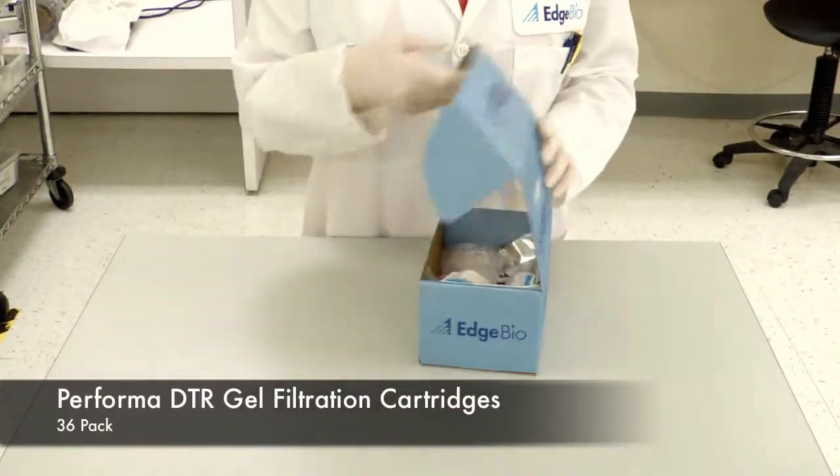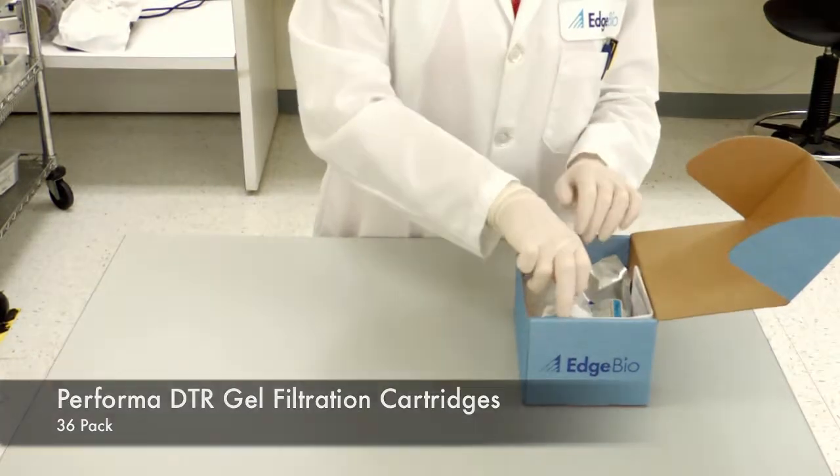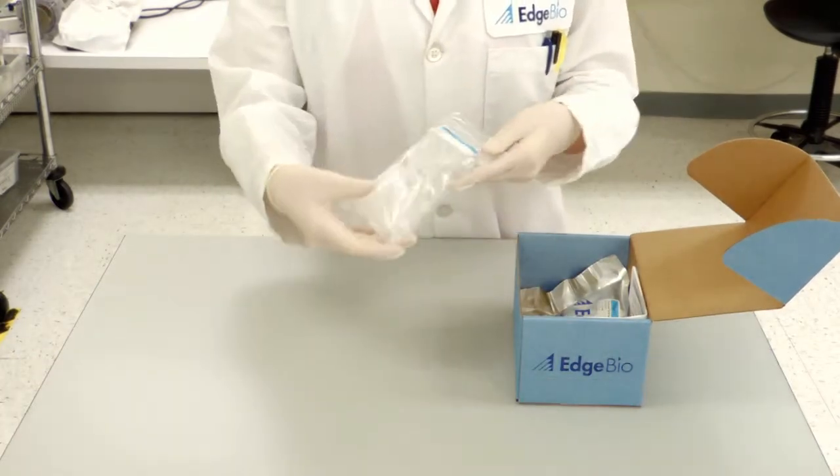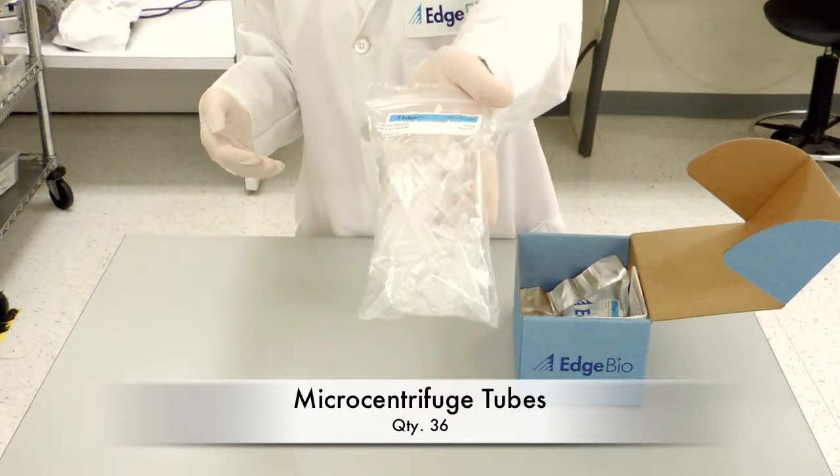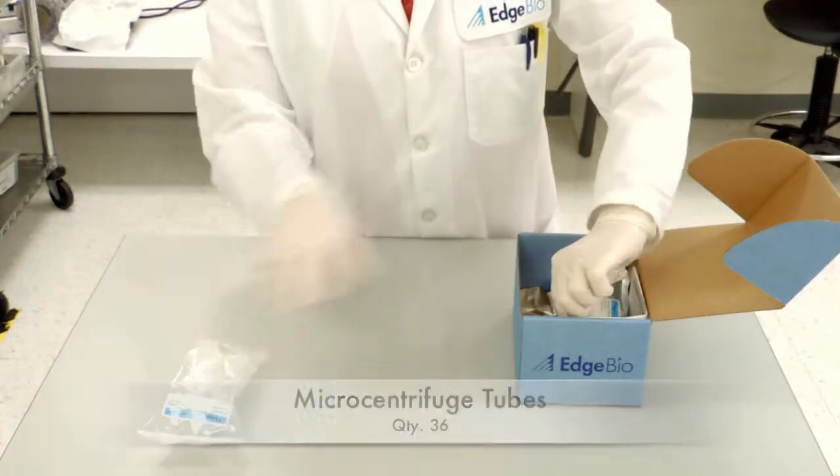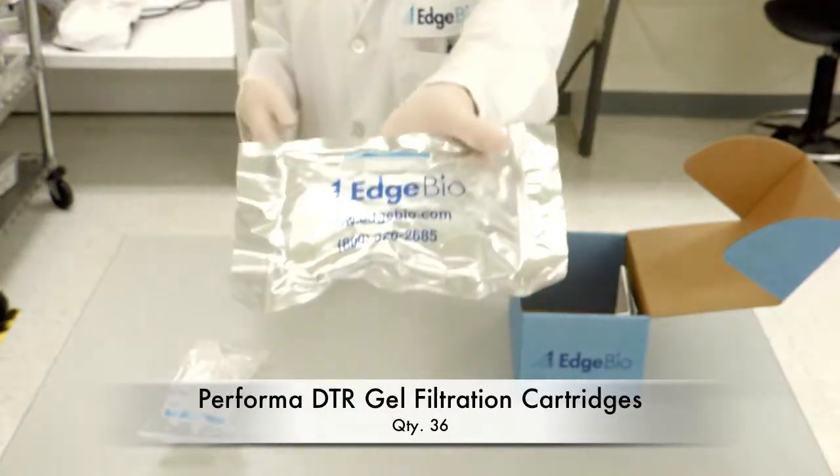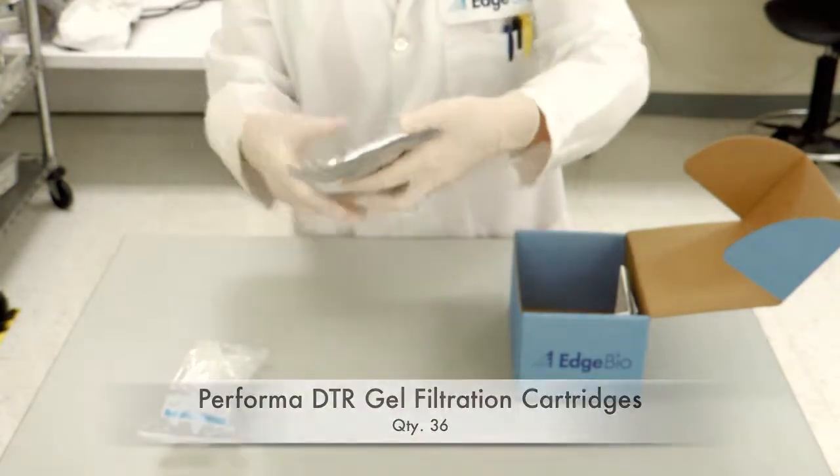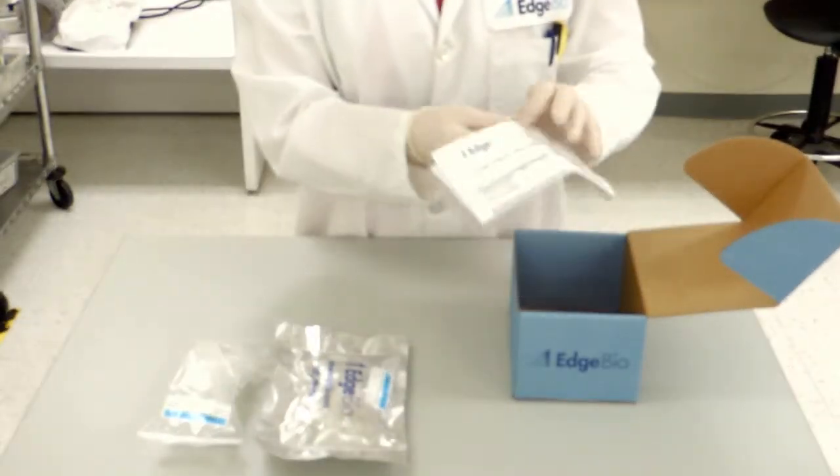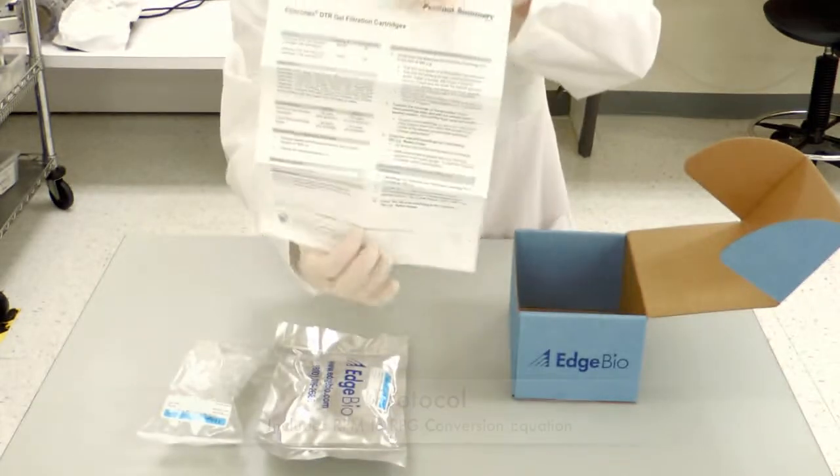Performa DTR cartridge kits come in two sizes, a 36-pack and 108-pack. Within the kit, you will find micro centrifuge tubes and Performa DTR cartridges packaged and labeled in the same manner as our plates.